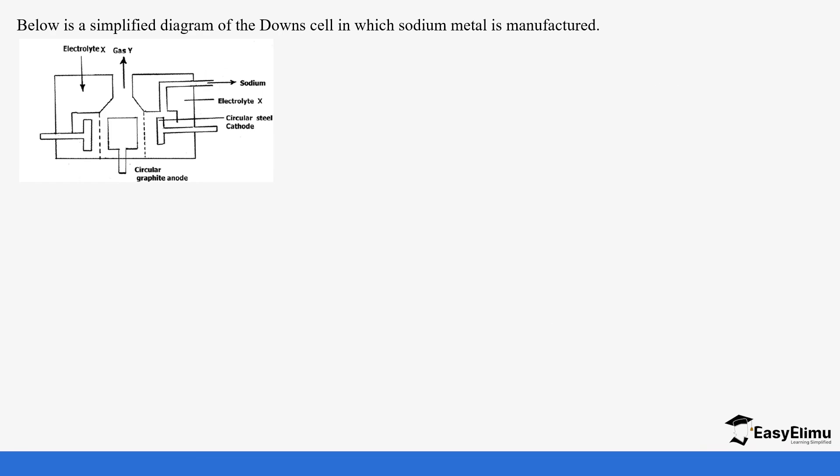This brings us to a practice question. We have electrolyte X which is the brine or sodium chloride. Gas Y is chlorine. This is the same electrolyte with cathode which is steel and the anode which is graphite. Identify electrolyte X - it's concentrated sodium chloride. Gas Y is chlorine gas.